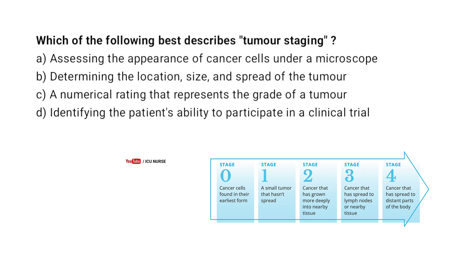Which of the following best describes tumor staging? A. Assess the appearance of cancer cells under a microscope. B. Determining the location, size and spread of the tumor. C. A numerical rating that represents the grade of a tumor. D. Identifying the patient's ability to participate in a clinical trial.